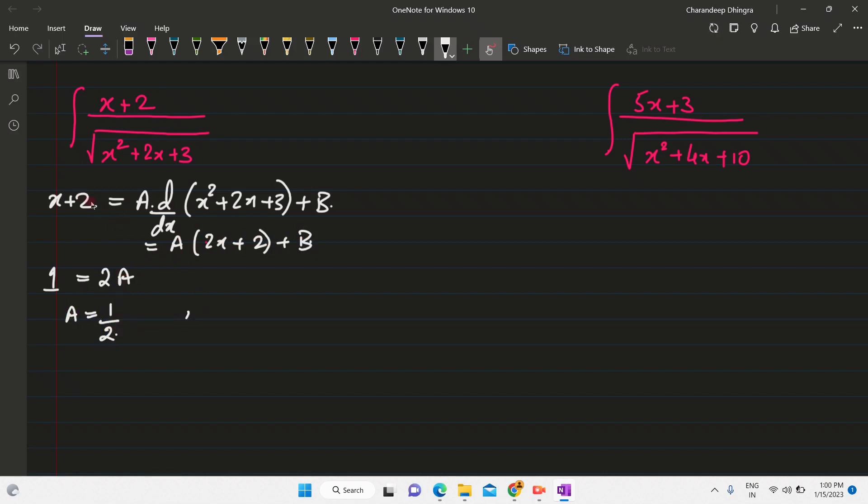Similarly, if you compare the constants, on the left side you have 2 and on the right side you will have 2A plus B and you know the value of A. So that is 2 into half. So that is 2 equal to 1 plus B. So the value of B is equal to 1.